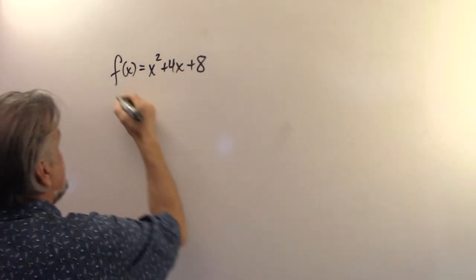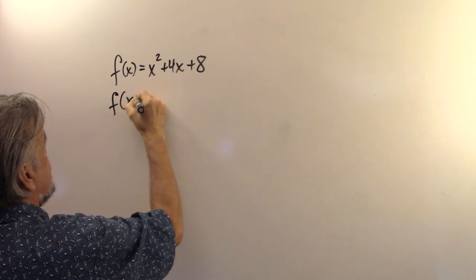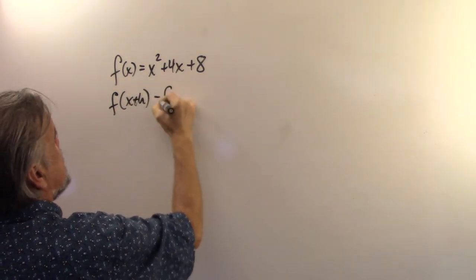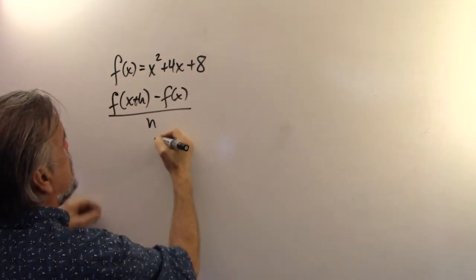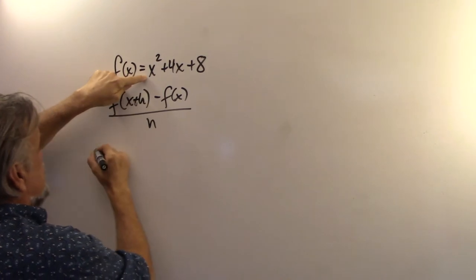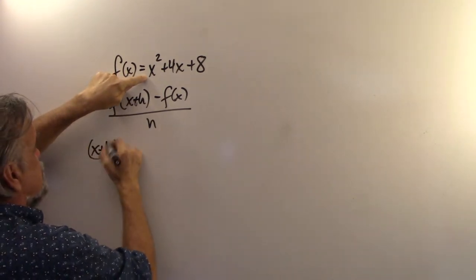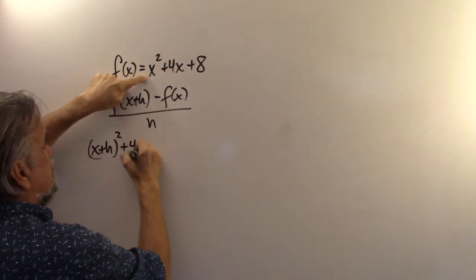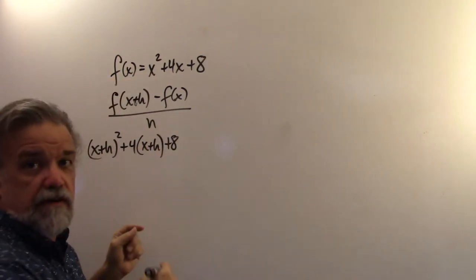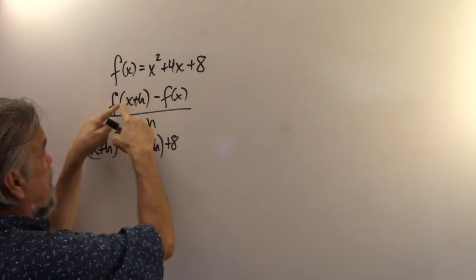Well, remember what we're doing. We're doing f of x plus h minus f of x over h. So, that's going to be f of x plus h is going to be x plus h squared plus 4 times x plus h plus 8. That's f of x plus h.